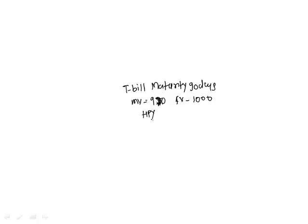The first one is holding period yield, which is the most basic. Holding period yield kind of ignores the time period. It simply says: how much did I invest? 970. How much am I earning? My earnings are 30. So holding period yield is simply 30 divided by 970, which gives us 3.09 percent.